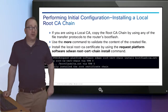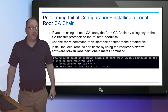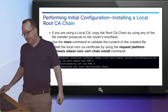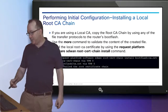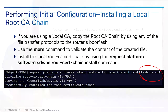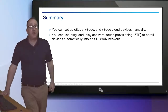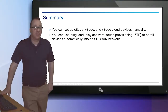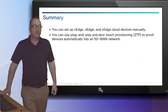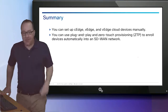If you're using a local root certificate authority, we need to copy that root CA chain to the router the same way as before. Then we do a request platform command to install that CA cert. This is the manual way to set up CEdge, VEdge, and VEdge cloud devices. We're also going to talk about using plug-and-play and zero-touch provisioning, but that's in the next set of slides.